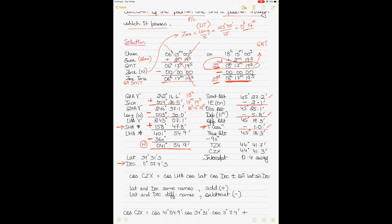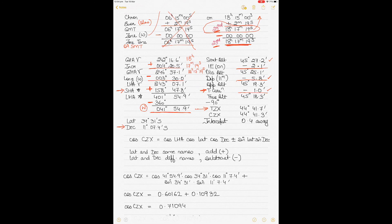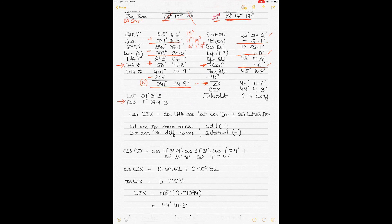Subtracting the true altitude from 90 degrees gives the true zenith distance (TZX or TZD). Stop at TZX at this stage. Next, calculate the calculated zenith distance (CZX) using the formula: cos(CZX) = cos(LHA) × cos(lat) × cos(dec) ± sin(lat) × sin(dec). The plus or minus depends on whether latitude and declination are the same name or different names.